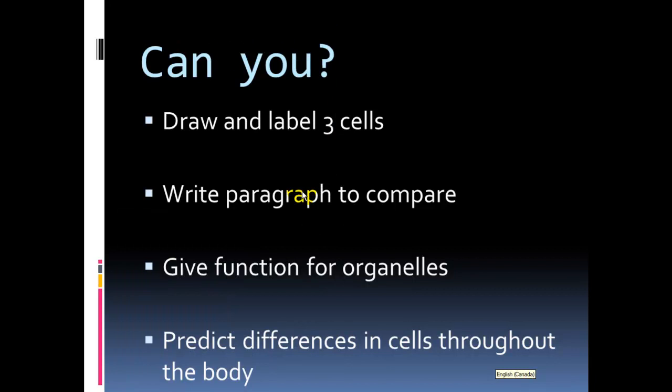Ending off. Can you draw and label the three types of cells - prokaryotic, plant, and animal? Could you write a paragraph to compare these three types of cells? Could you give the functions for all the organelles? Could you start to see that cells in different parts of the body are going to have different functions, and therefore they're going to have different organelles? Hope that helps.